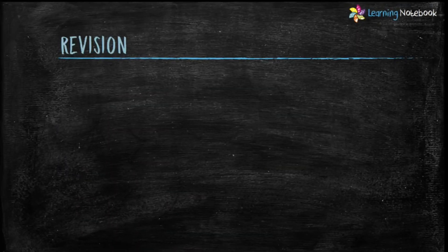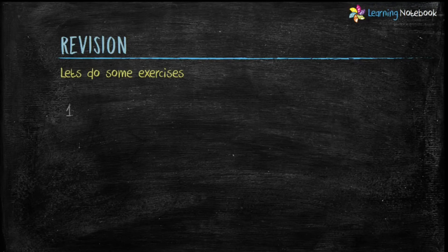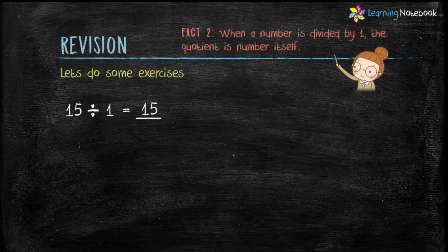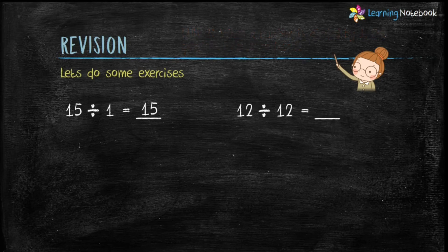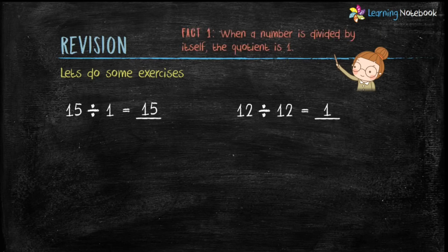Now let's do some more exercise based on division facts. First is, 15 divided by 1 equals — answer is 15, because we learnt in division fact 2, when a number is divided by 1, the quotient is the number itself. Second is, 12 divided by 12 equals — answer is 1. It is based on fact number 1.